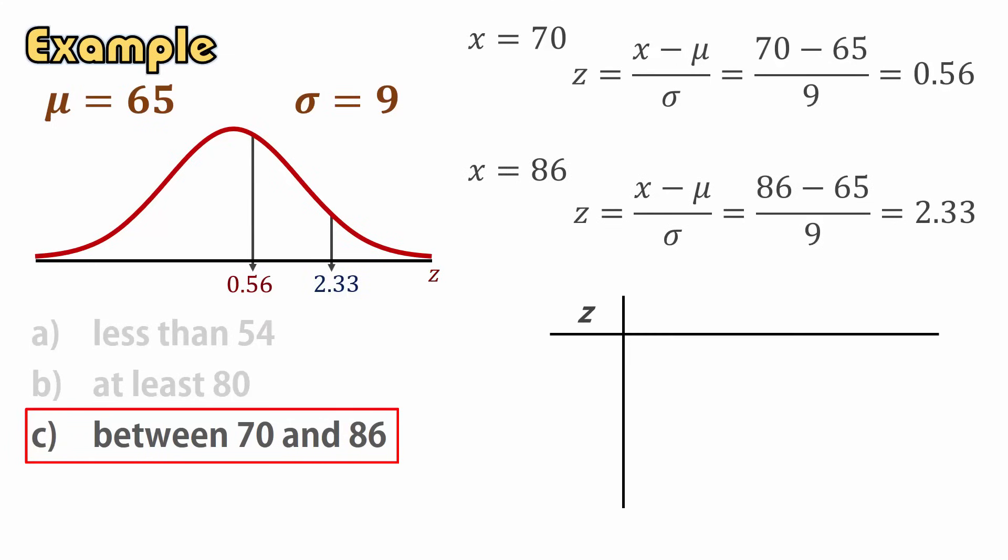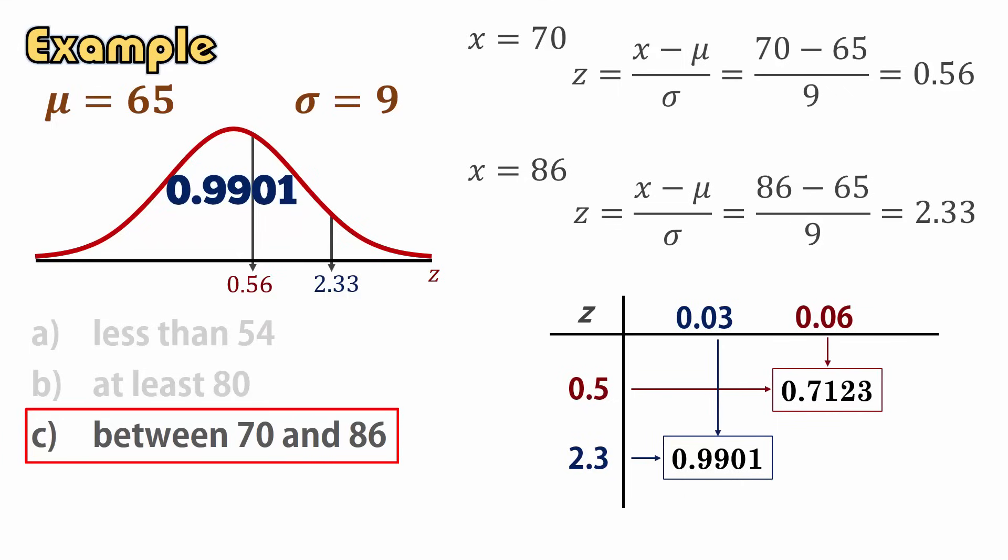On the table, the area less than z equals 2.33 is 0.9901. While the area less than z equals 0.56 is 0.7123.